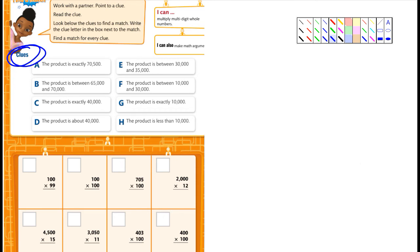So for example, if I did this one right here, 100 times 100, it shouldn't be too difficult. All you need to do is add zeros. It's going to be four zeros. And so it's a 1 and a 0 followed by three more. The answer is 10,000, and then you'd look through the letters here, and here's one that says the product is exactly 10,000. So the letter G would go in that box right there, and that's how you do those.